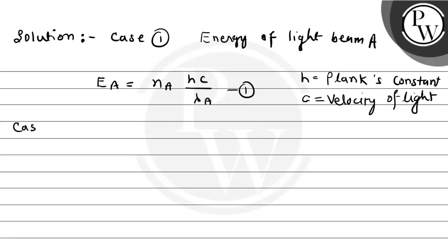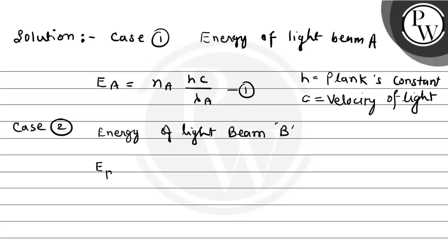Now we consider case number two. In case two, the energy of light beam B — we denote it as Eb. Eb equals nb times h c upon lambda B. This becomes equation number two. As per the given condition in the question, both beams are under the same conditions, so Ea equals Eb.